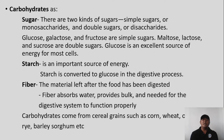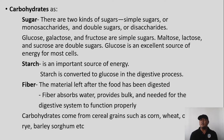The material left after the food has been digested is called fiber. Fiber can be found specifically in forages, grasses, and legumes. When animals consume forages and grasses, fiber remains after digestion. Fiber absorbs water and provides bulk, and is needed for the digestive system to function properly.